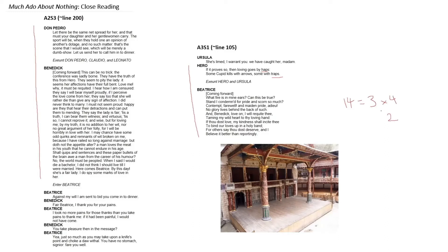The Shakespearean sonnet follows this rhyming structure of a, b, a, b, c, d, c, d, e, f, e, f, and then g, g for the couplet at the end. Beatrice's bit over here consists of only 10 lines — however, it's two quatrains and a couplet. You'll note that the quatrains follow an internal rhyming structure, so we have 'true'/'adjut' (a, a), 'much'/'such' (b, b), and 'hand'/'band' (d, d), and then 'I' and 'reportedly' — maybe they made it work back in Shakespearean times.